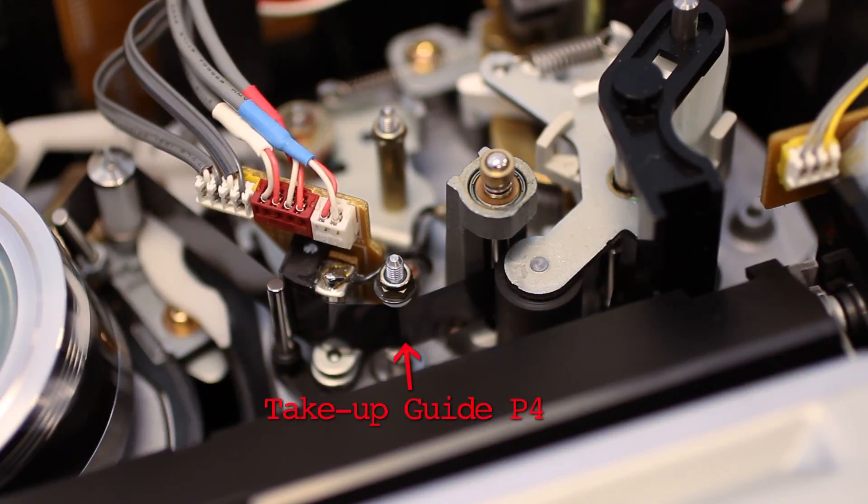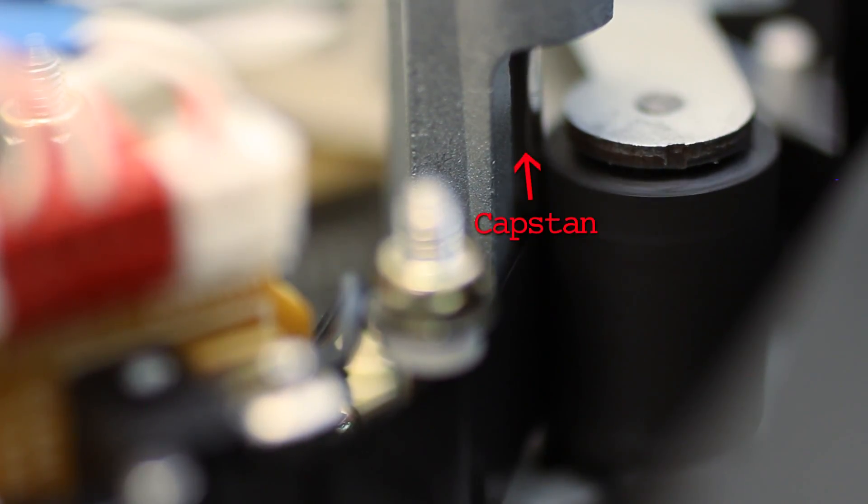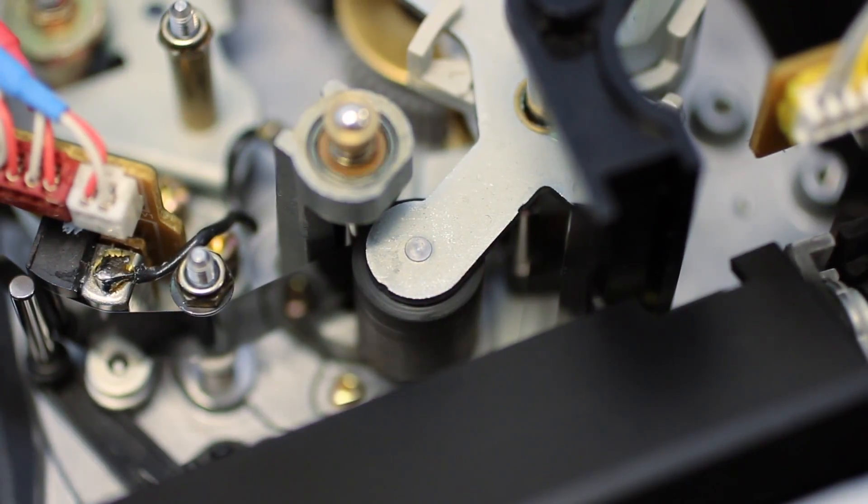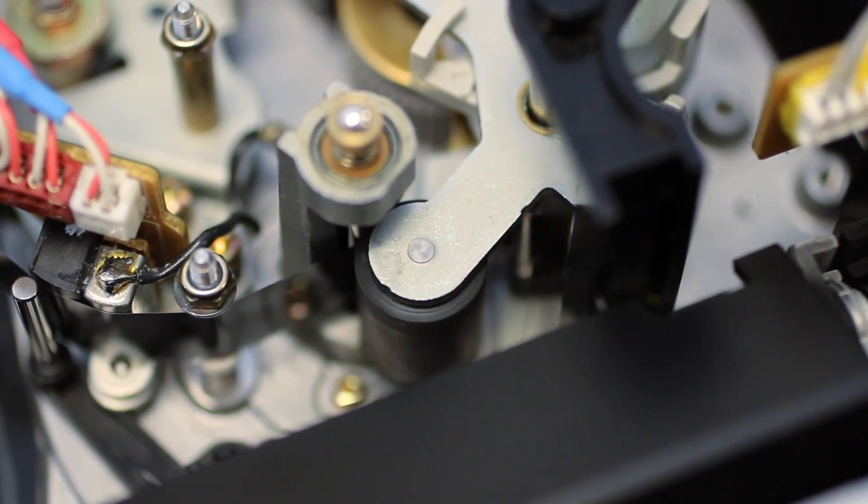After the tape passes the final take-up guide, P4, it's sandwiched between the capstan and the rubber pinch roller, which is working with the servo system to move the tape through the tape path. The movement of the capstan is extremely precise, and it allows for the tape to move smoothly and at a constant speed during playback, so that the recorded video and audio can be output to a monitor for viewing.